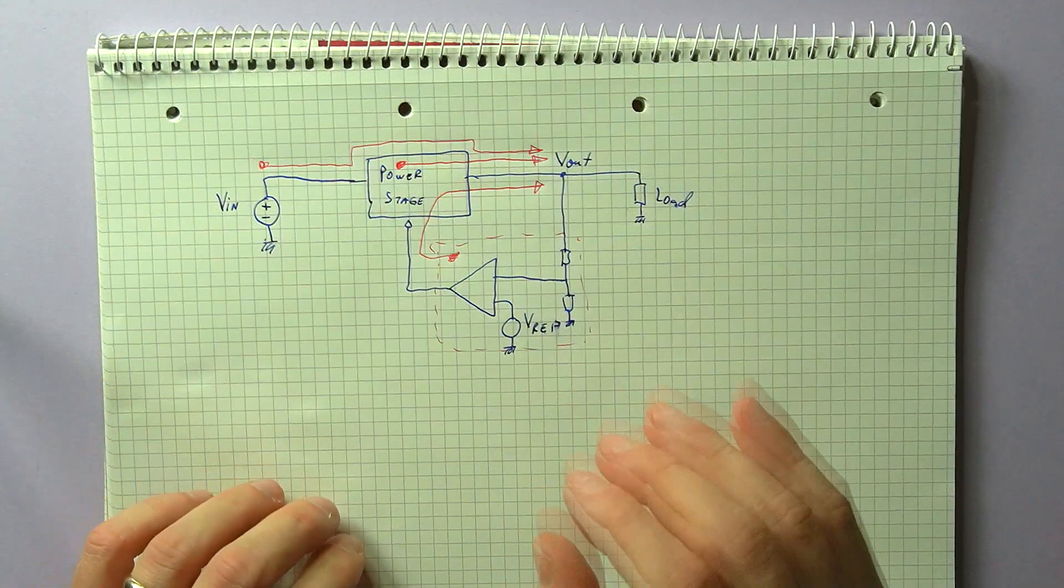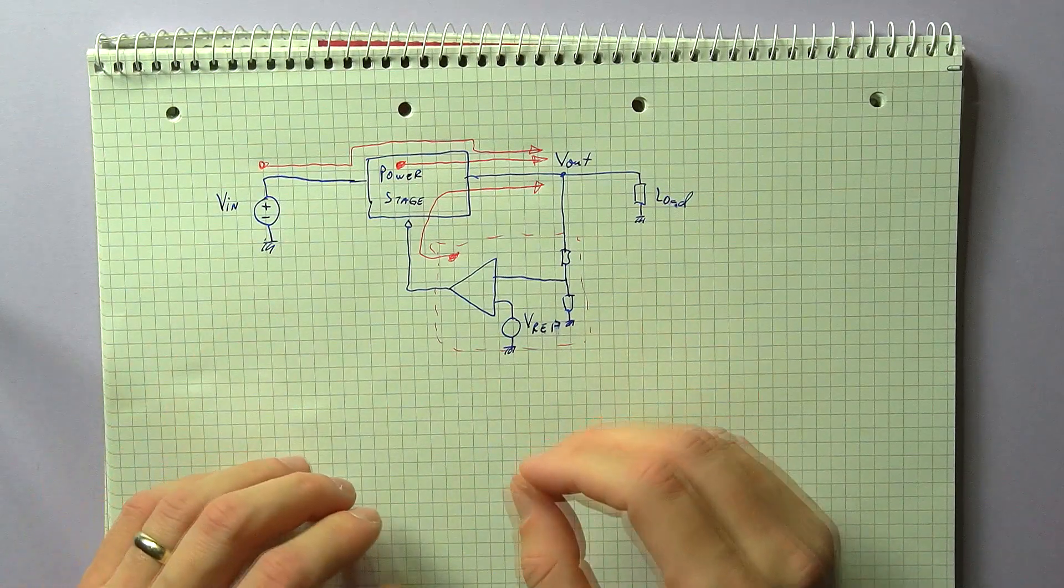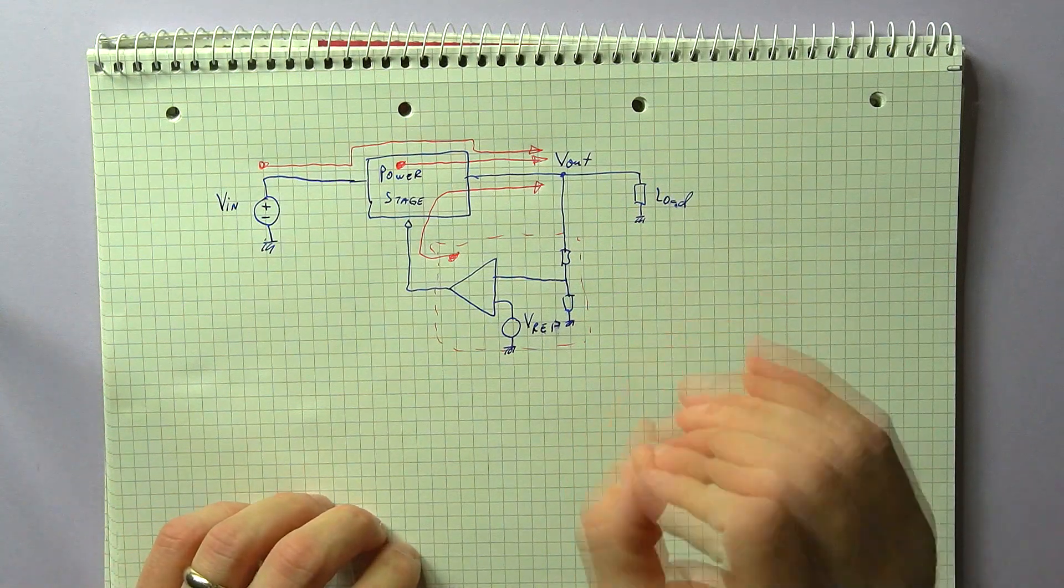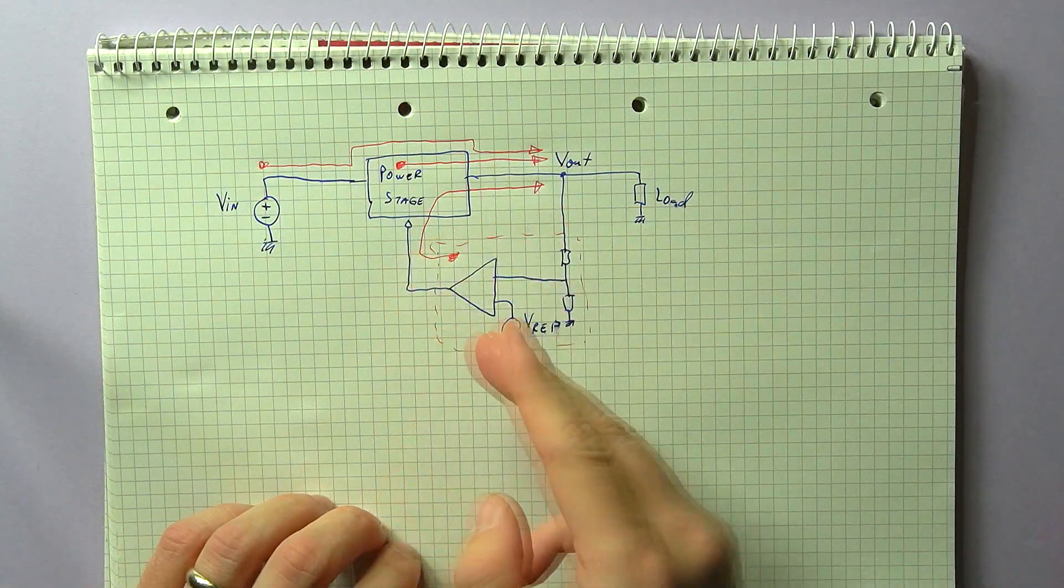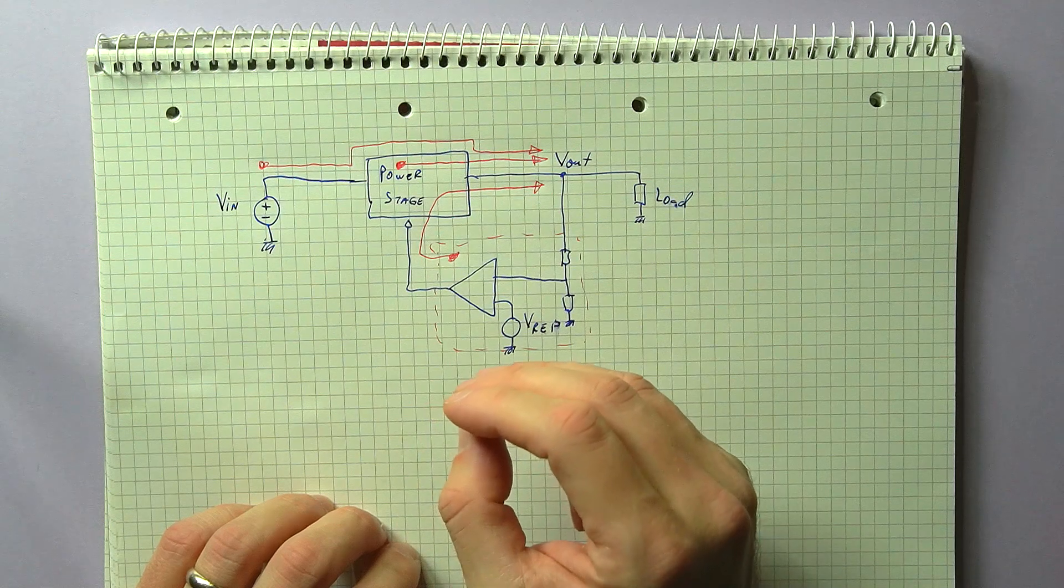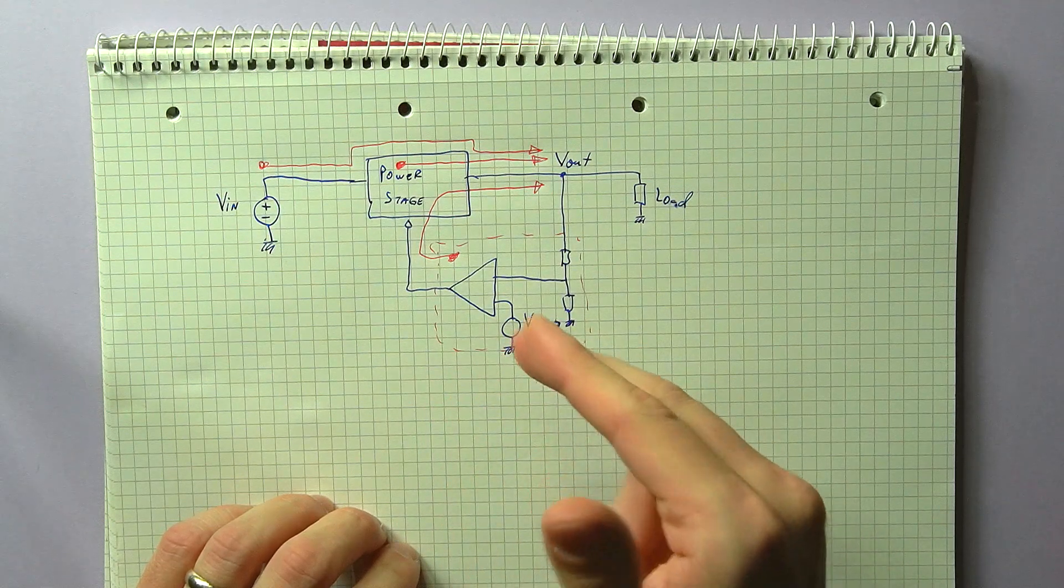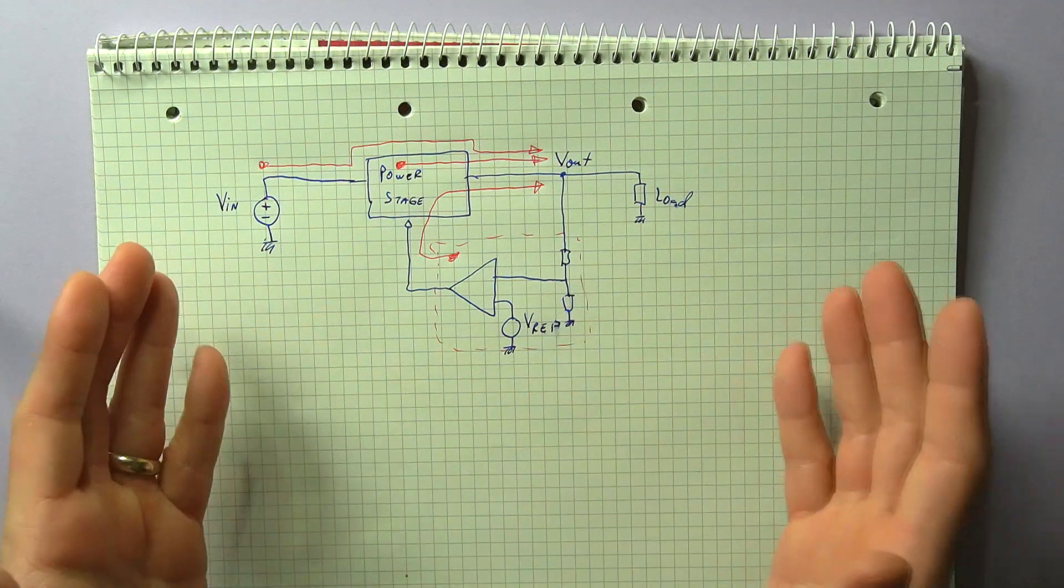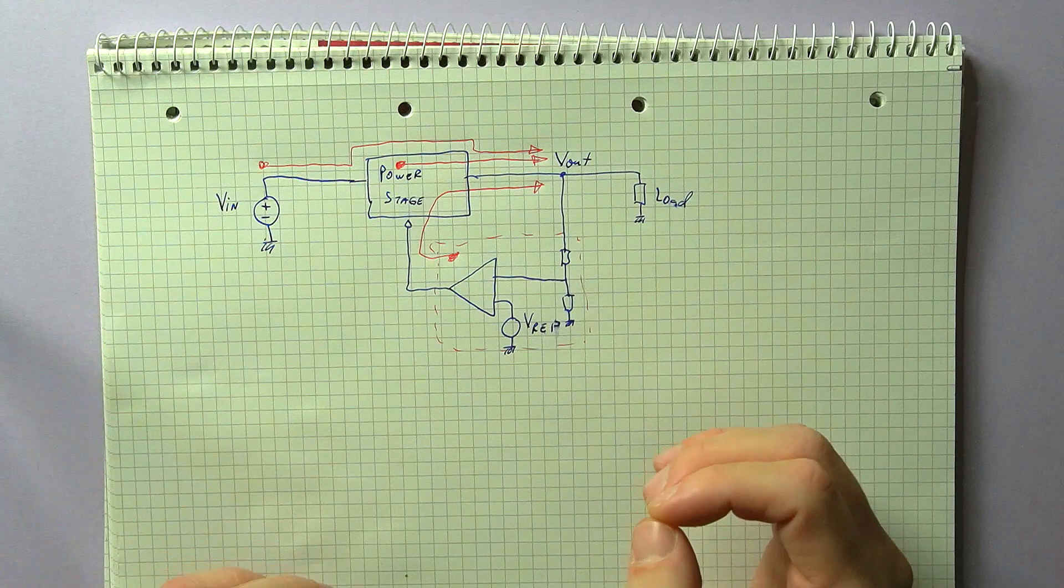And finally, even if you have a nice linear regulator with a very stable input source and no external perturbations, there will still be noise on the output coming from the elements in the feedback network. So mainly the voltage reference, the error amplifier and the feedback resistors. There is no such thing as a perfectly clean electronic power supply.